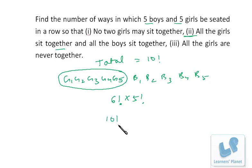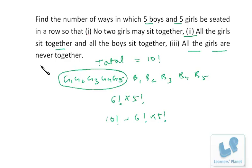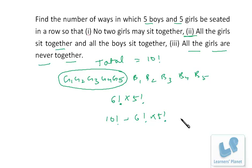So in the remaining arrangements — that is, total minus all-girls-together — all the girls will never be together. Two or three or four girls may be together, but all five girls will never be together, which is what we are asked. So the total number of arrangements is 10!, and we deduct the arrangements in which all the girls were together, which gives us 10! − 6! × 5!. I hope you are clear.